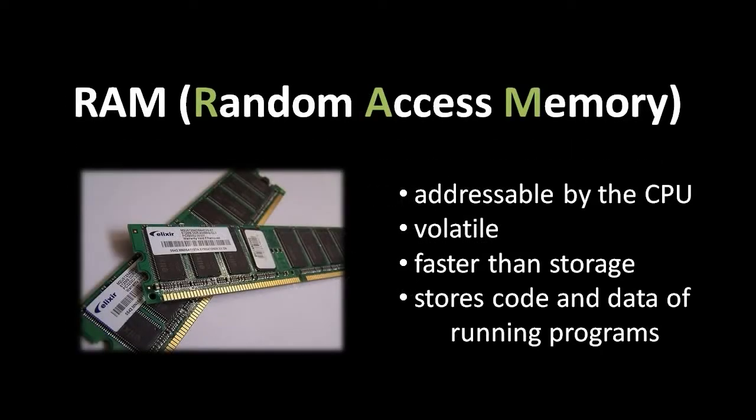Of all the components in the system, the RAM, the system memory, is the simplest. RAM is really just a big bucket for storing bits, and as far as the CPU can see, these bits are organized into bytes, each with its own address — a numeric value that uniquely identifies that byte. The first byte has address 0, the second has address 1, the third has address 2, and so on, all the way up to the last byte.